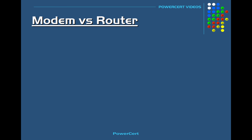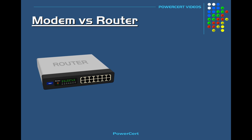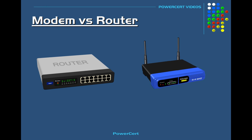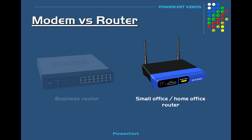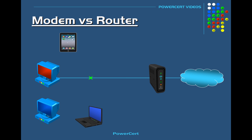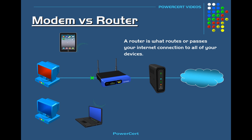A router comes in after the modem. There are different types of routers — routers used in businesses and larger organizations, and smaller routers used in homes and small businesses — but they basically do the same thing. For this video we're going to use the small office home office router that most of us are familiar with. A router is what routes or passes your internet connection to all of your devices in your home or business.